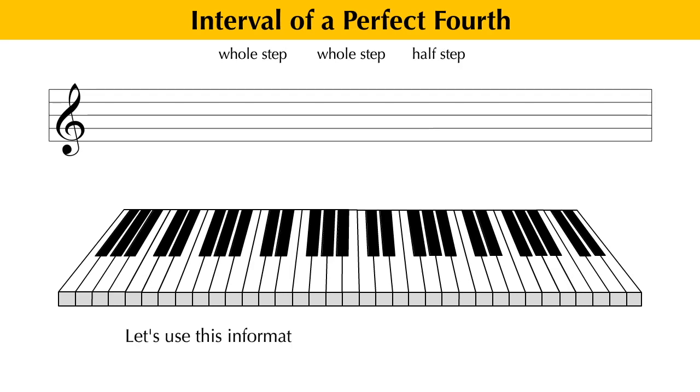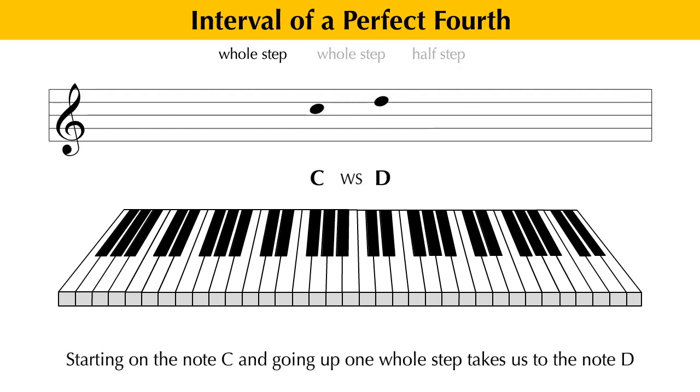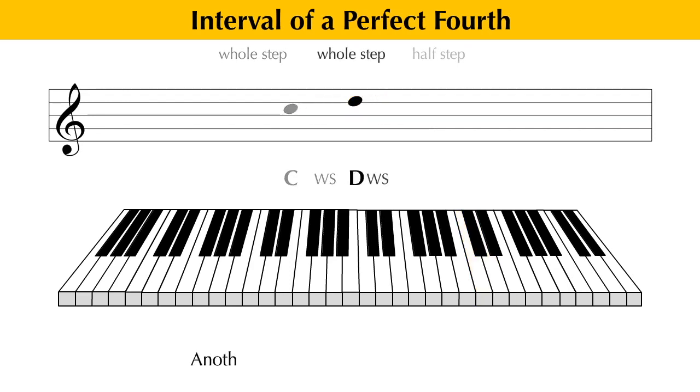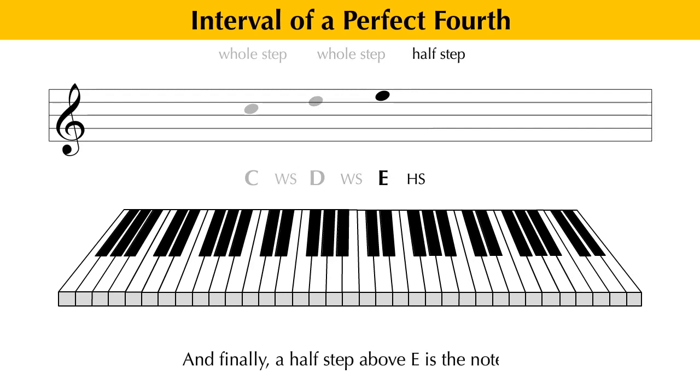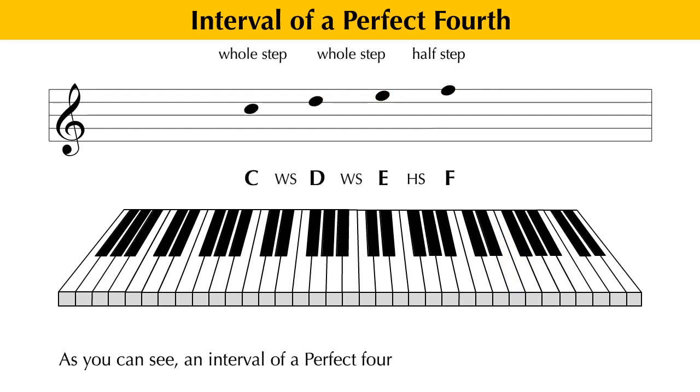Let's use this information to figure out what an interval of a perfect fourth above the note C is. Starting on the note C and going up one whole step takes us to the note D. Another whole step above the note D is the note E. And finally, a half step above the note E is the note F. As you can see, an interval of a perfect fourth above the note C is the note F.